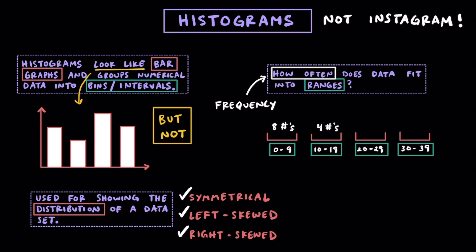If we had 4 numbers that were between 10 and 19, they would go into the second one. 5 numbers that were between 20 and 29 go in the third one. And 7 numbers that were between 30 and 39, they would all fit into this last bin.